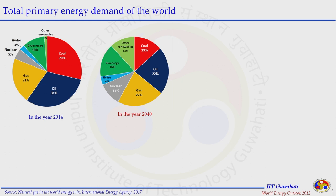If we look at the total primary energy demand of the world in 2014 and compare it with the projected value of 2040 — data taken from the IEA published in 2017 — we can see fossil energy is still going to be the dominating factor. The share of nuclear energy is going to increase from 5% to 11%. The coal percent is going to be reduced from 29% to 13%, oil from 31% to 22%, while gas percent is going to increase in the future.